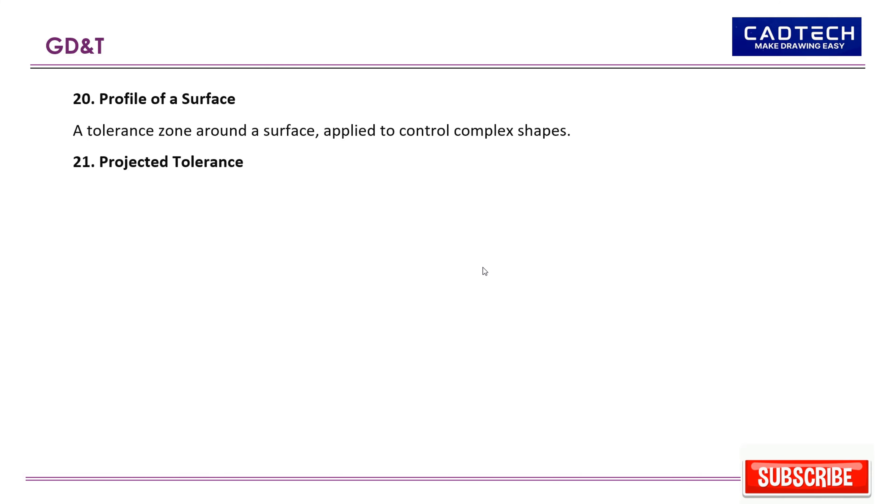21. Projected tolerance zone: A tolerance zone applied to the extension of a feature beyond its actual physical dimension, often used for threaded holes and studs.